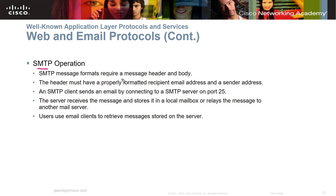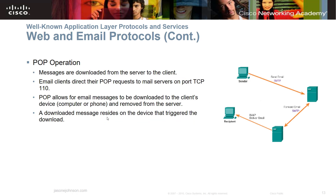SMTP message formats require a message header and body. The header must have a properly formatted recipient email address and a sender address. An SMTP client sends the email by connecting to a server on port 25. The server receives the message, stores it in a local mailbox, and can relay it to another mail server. For POP: messages are downloaded from the server to the client and do not stay on the server. Email clients direct POP requests to mail servers on port 110. Once downloaded, the messages are removed from the server — so if you pull your email on one device, it won't be available on another.